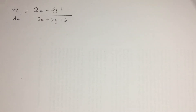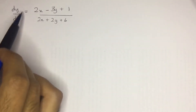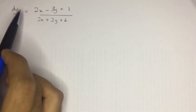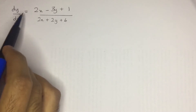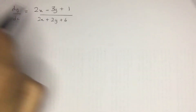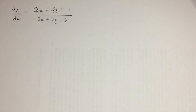Without wasting our time, let's move to the question. Over here, you can see that there is an equation dy by dx which is equal to 2x minus 3y plus 1 divided by 2x plus 2y plus 6.